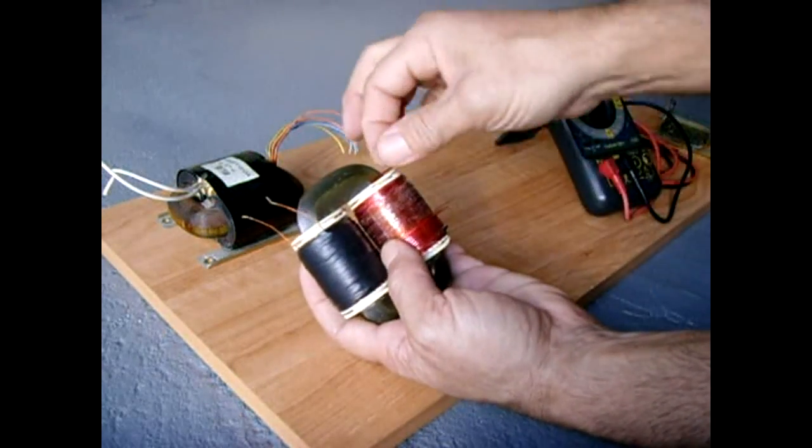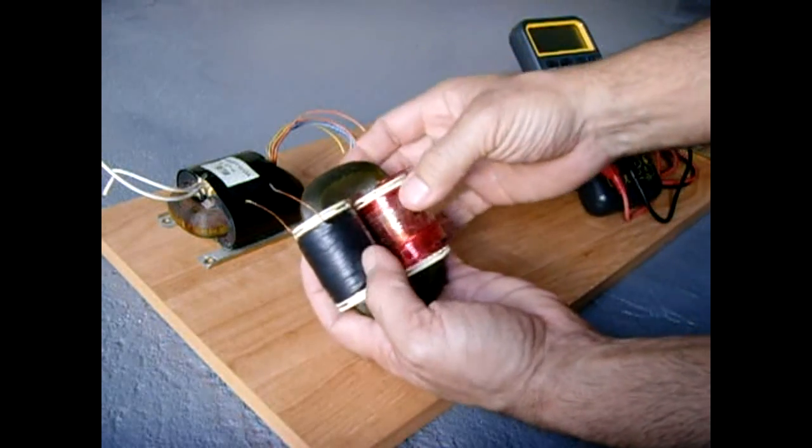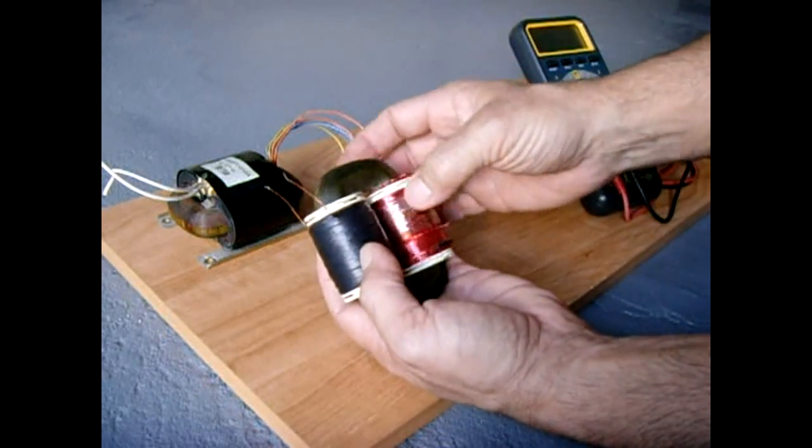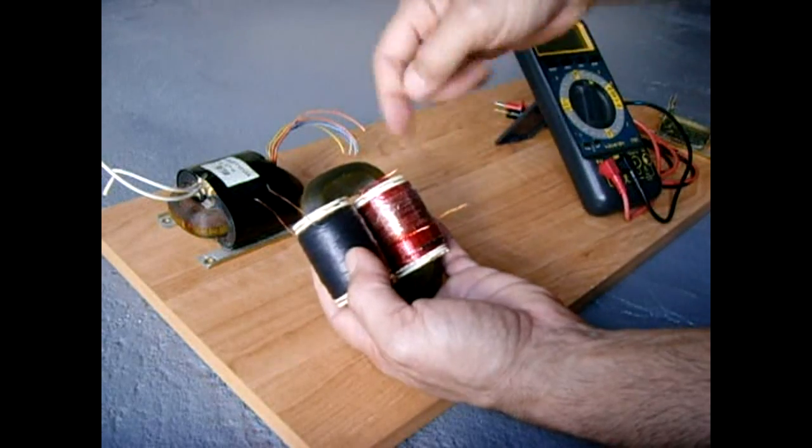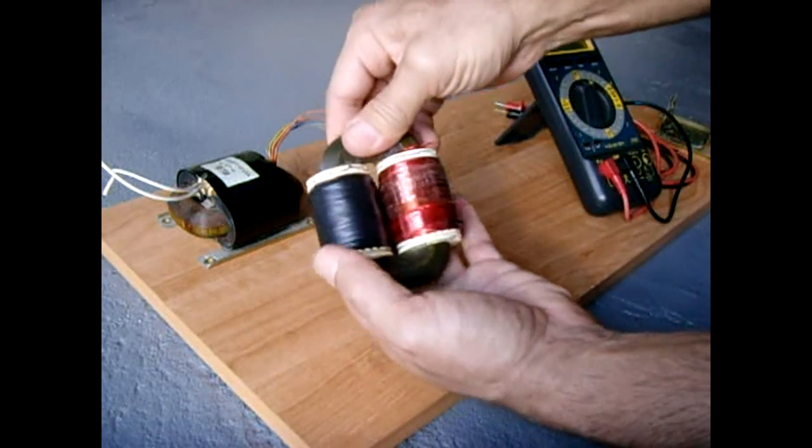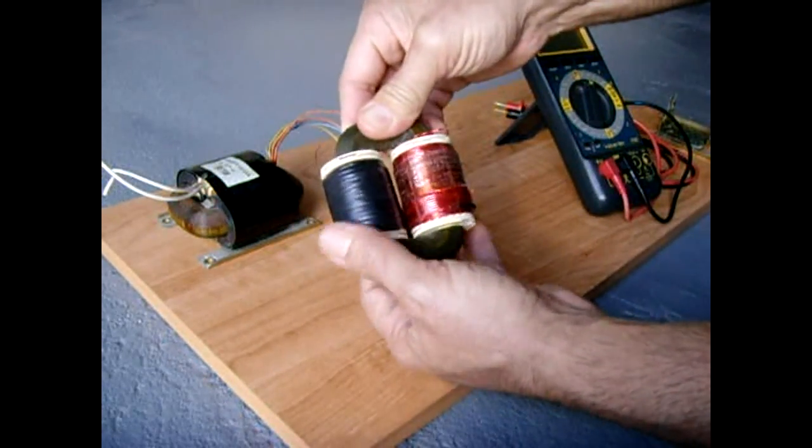But look how easy this is. You start here, I drilled the hole, pulled the wire through. And I just turned this and just kept spinning it around while I just kept the other spool feeding it in. So it doesn't get any easier than this type of a core.